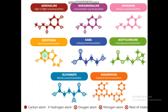Different types of neurotransmitters include: adrenaline, serotonin (also known as the mood neurotransmitter), GABA (gamma-aminobutyric acid), which is a calming neurotransmitter, acetylcholine which is a learning neurotransmitter, glutamate which is a memory neurotransmitter, and endorphin which is a euphoria neurotransmitter. The structures of these neurotransmitters are also shown.